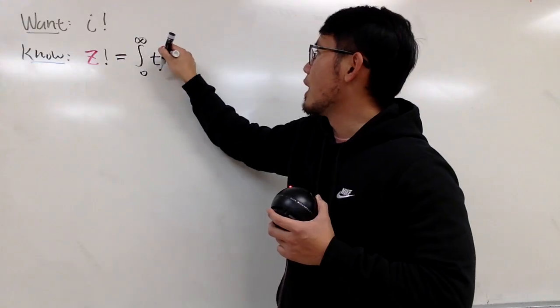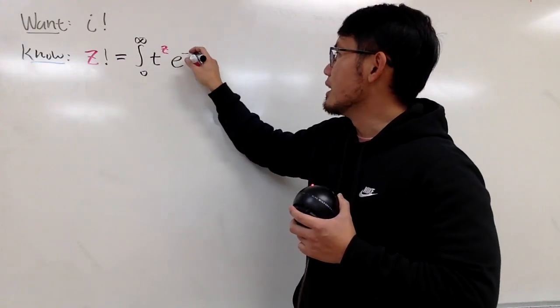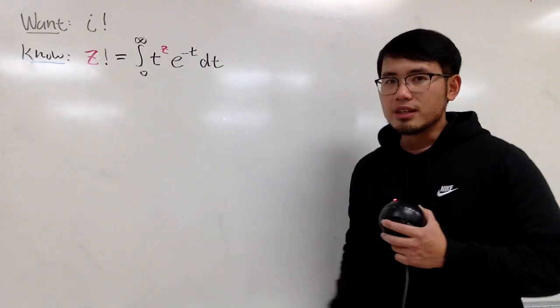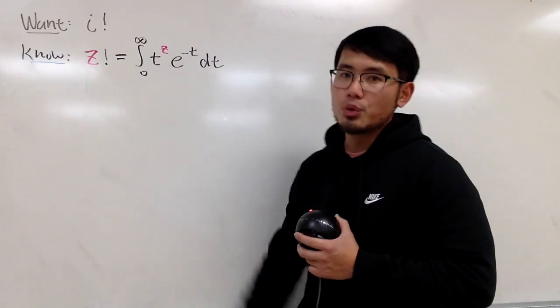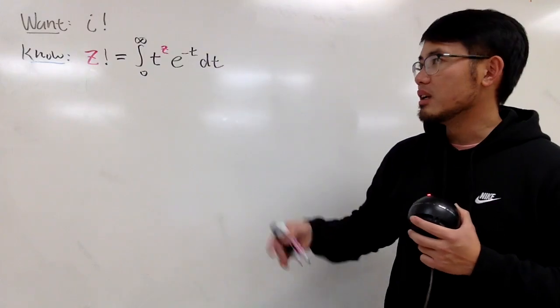t to the z's power, times e to the negative t dt. And this right here is just from the gamma function or from the pi function. And you end up with this integral anyway.